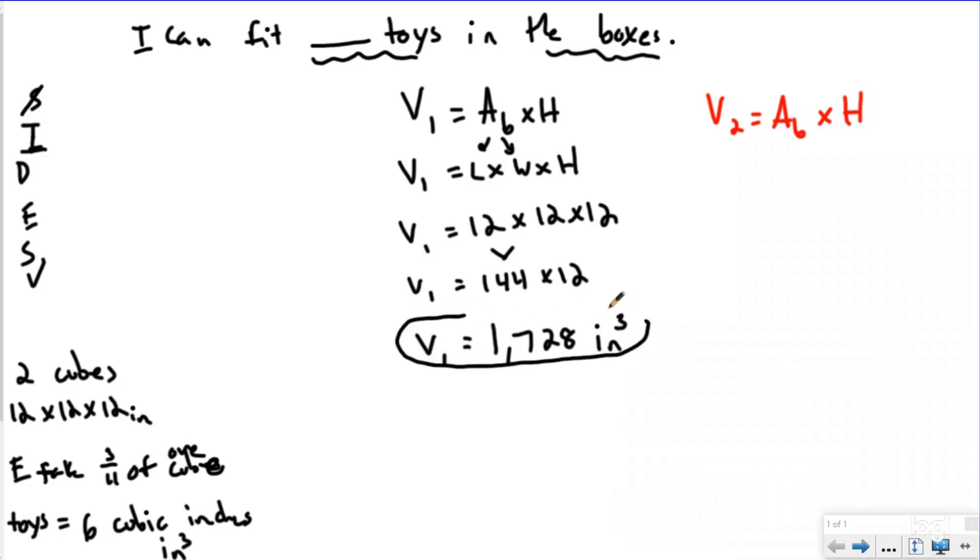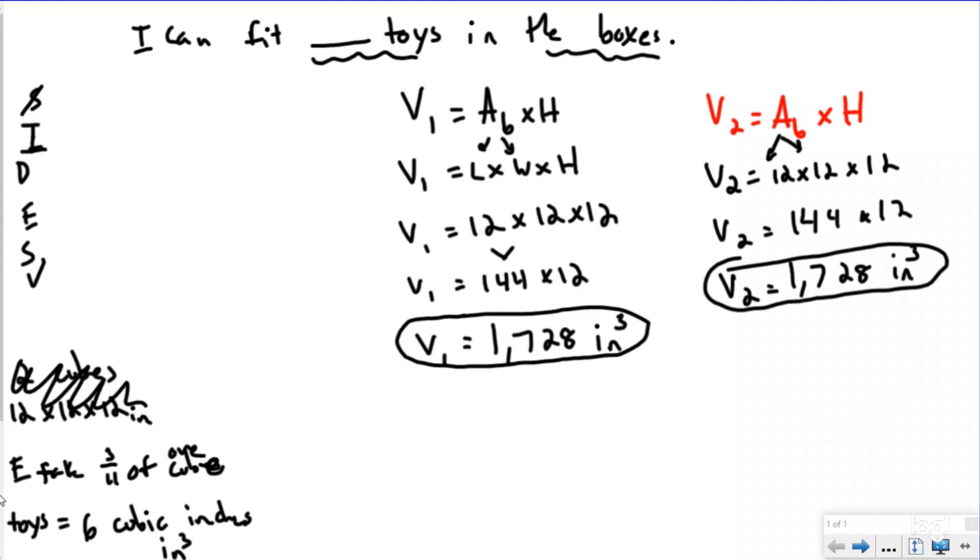And then, like I said, the good news was both of them were the exact same size. And so I'm going to go through the process again. Now, some of you guys could just skip this and multiply it by two. But here at Quarantine Math, we just like to show every step. That way, if you did make a mistake, you can easily find out where you did that. And so we know that both of these had a volume of 1,728 inches cubed. However, I need to remember that my son is taking up three fourths of one of the cubes.